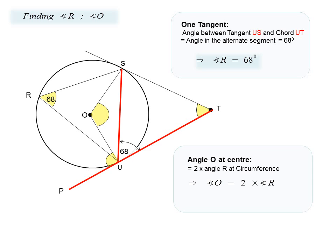We can immediately deduce that because angle O is subtended at the center, angle O is twice angle R, and therefore angle O is equal to 136 degrees.